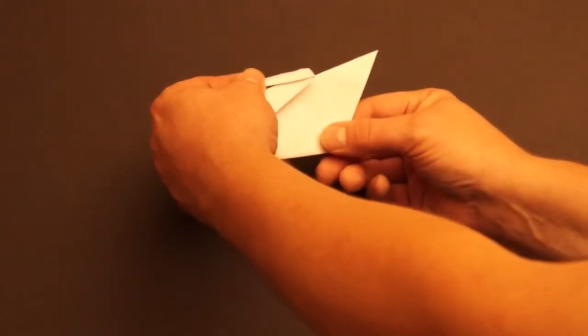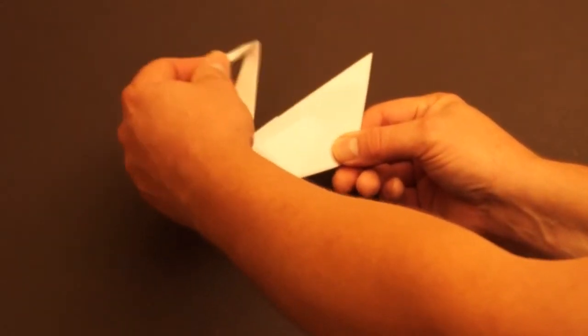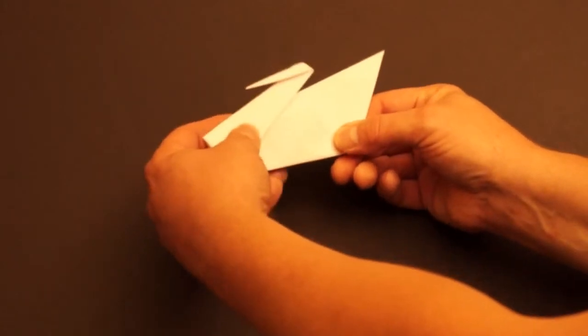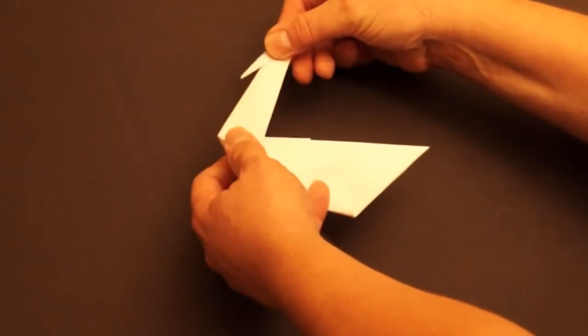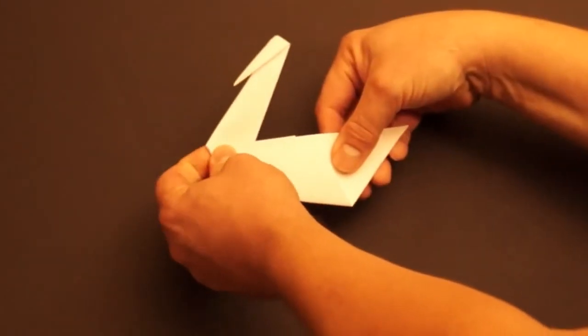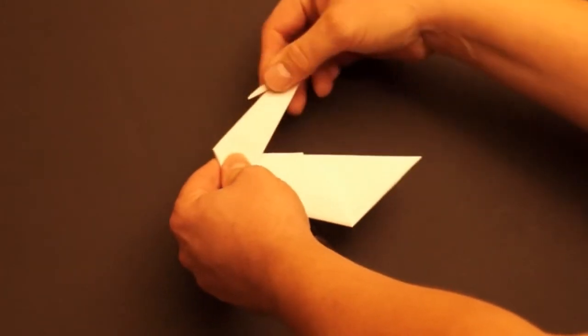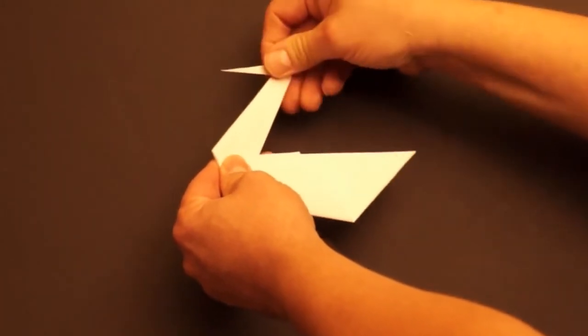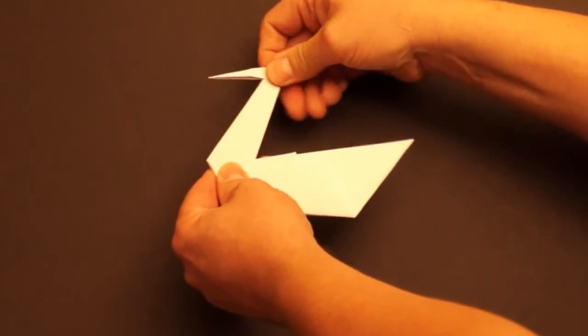Then you take this part and you pull it, pull that up. Here's the neck. We pull this up. And this is the bird beak, the swan beak.